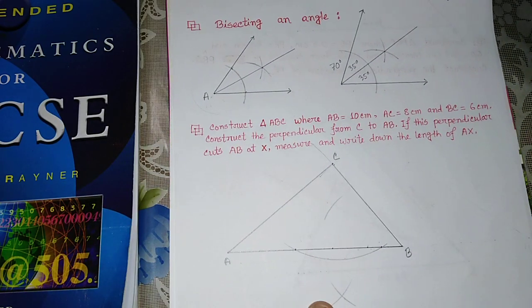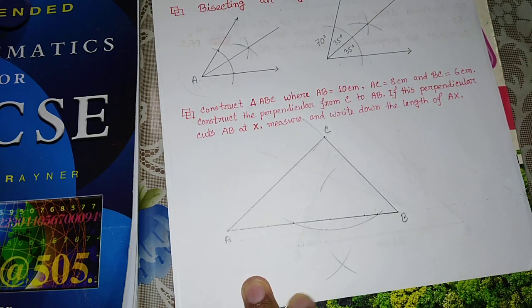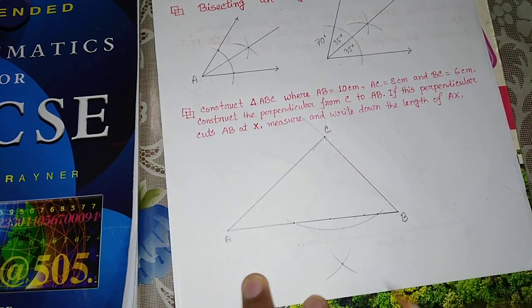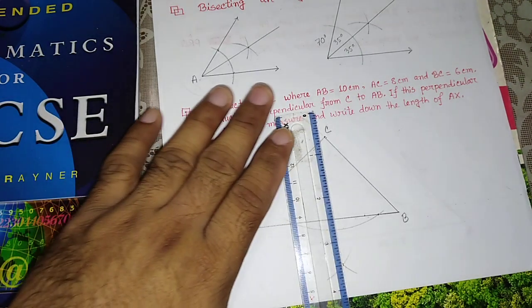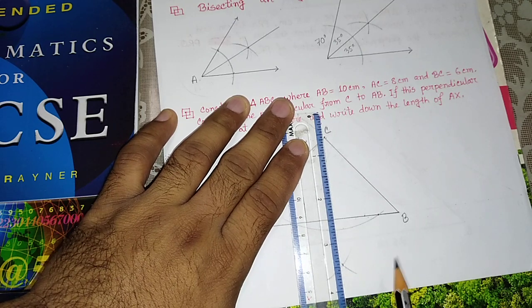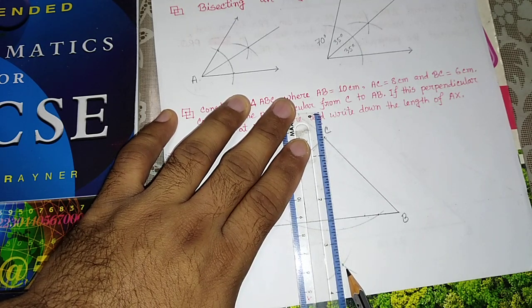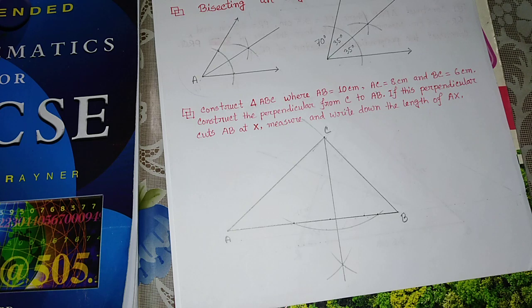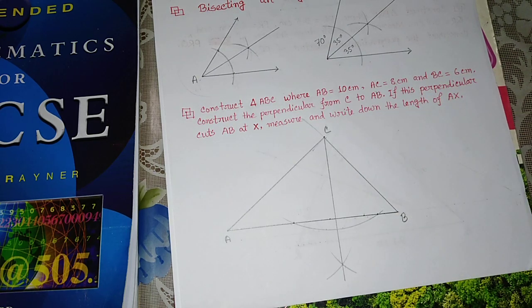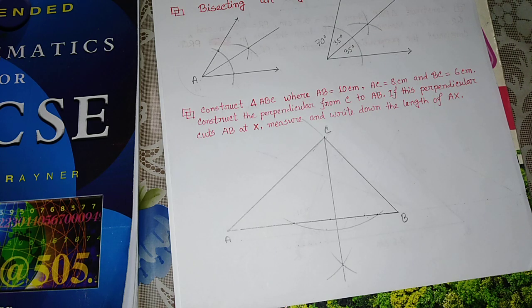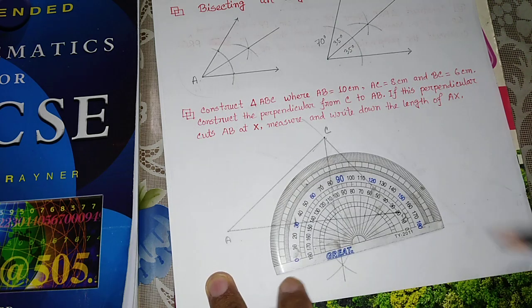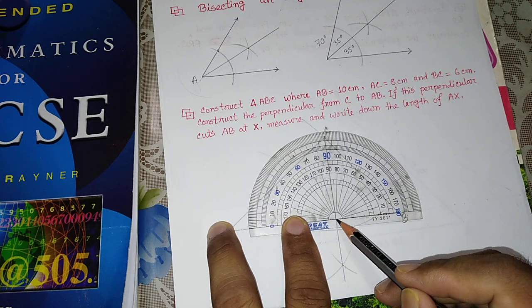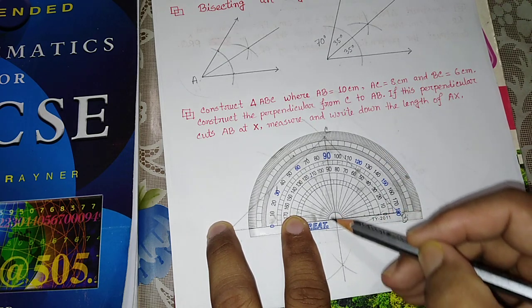The arc is drawn from the points, and they are intersecting. This one is my required perpendicular from C to AB. That means this one is the perpendicular line forming a 90 degree angle.